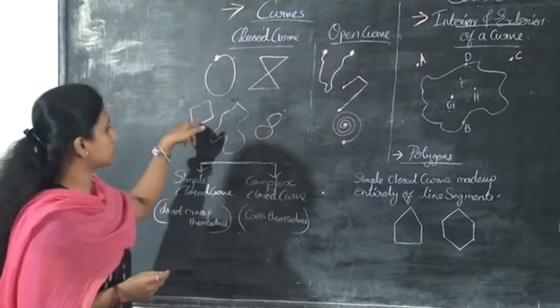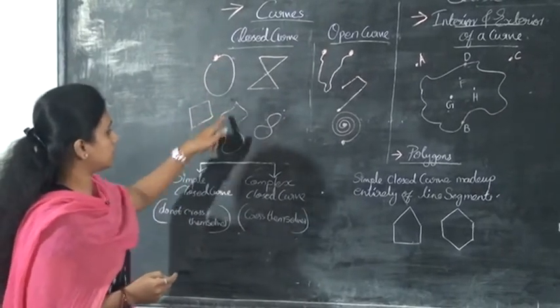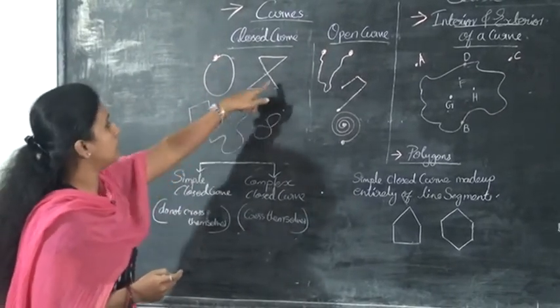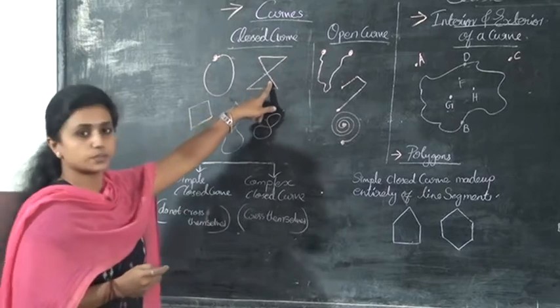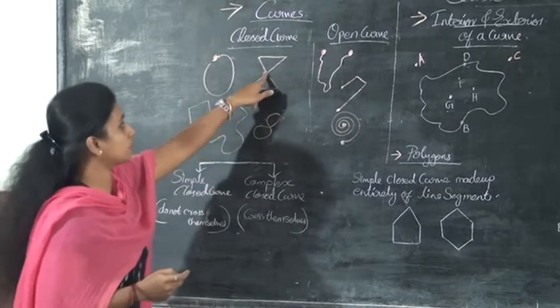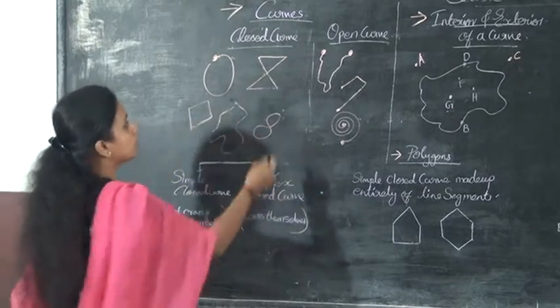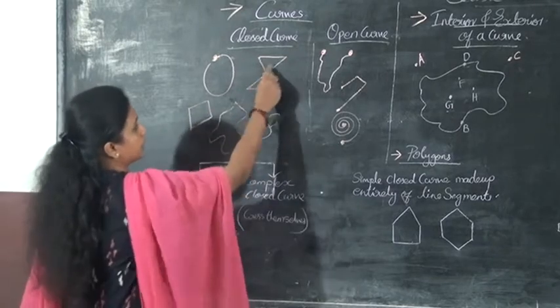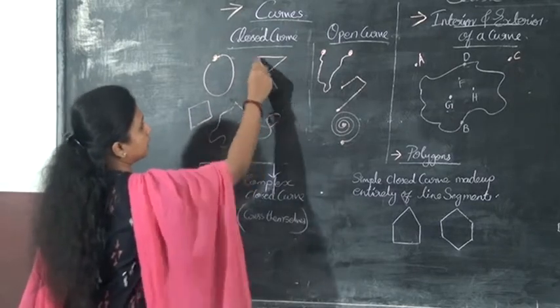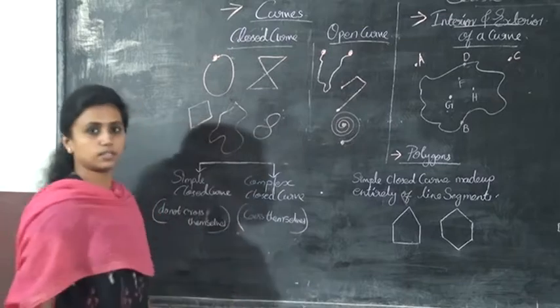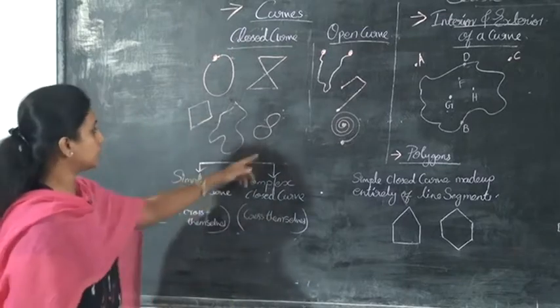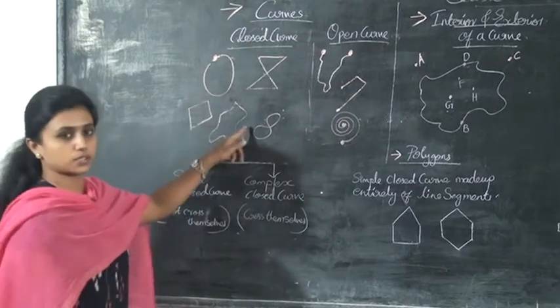Here, this is a closed curve. The starting point meets the ending point — that is a closed curve. This one is also closed. These all are closed curves.